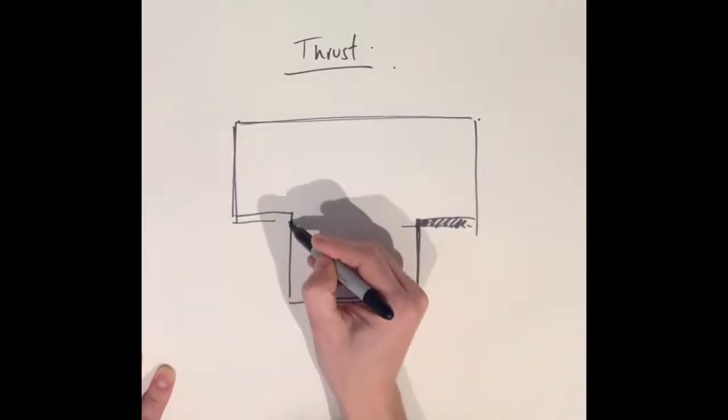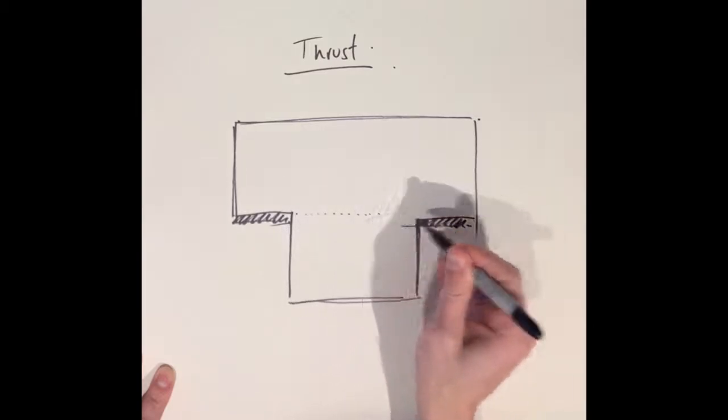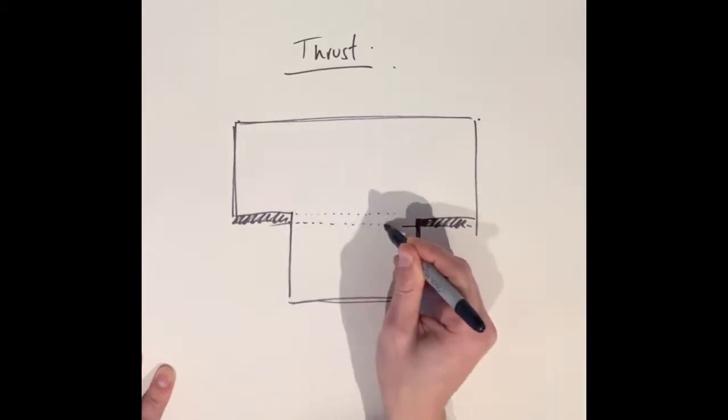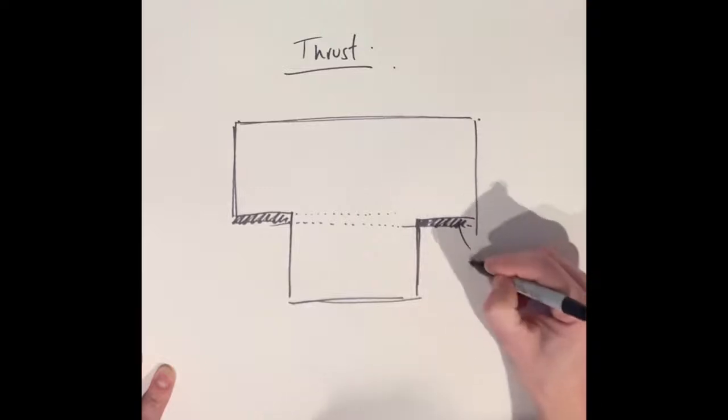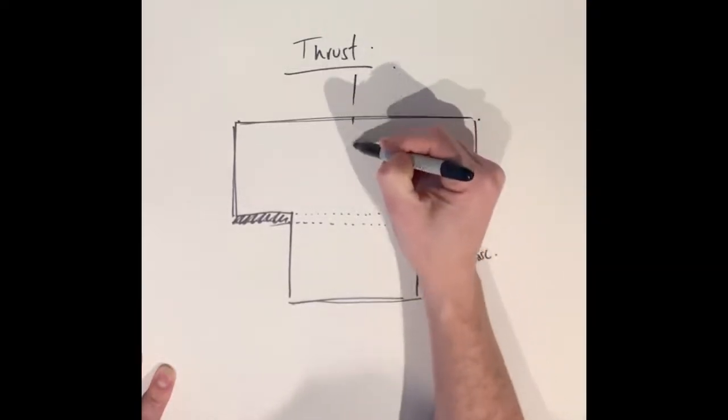I've decided for this example to add a proscenium arch to the normal layout of the stage which I'm drawing in now, and again using the dashed line to show where the proscenium will go over the stage height, and I'm labeling them now.